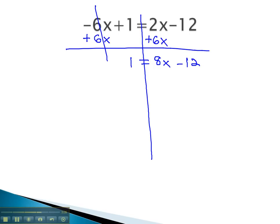Now, we have a simple two-step equation, which we can solve by adding 12 first to both sides. That will give us 13 equals 8x.